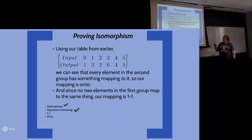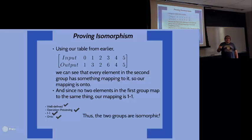To show that these two groups are isomorphic, look at our table from earlier. You can see that every element in the second group has something that maps to it, so it's an onto mapping. And no two elements in the input map to the same element in the output, so it is one-to-one. Since it is one-to-one and onto, it's bijective, which means our mapping is an isomorphism.